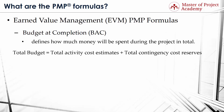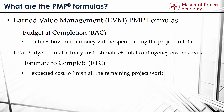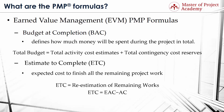PMP formula number 8: Estimate to Complete or ETC. Estimate to Complete represents the expected cost to finish all the remaining project work. ETC can be determined by re-estimation of the remaining works in a project, in which case its formula is: ETC equals re-estimation of remaining works. Also, we can calculate it by subtracting the actual cost (AC) of the accomplished activities from EAC. Assuming the work is proceeding as planned, the formula is: ETC equals EAC minus AC.